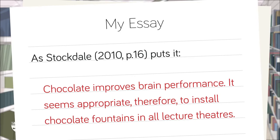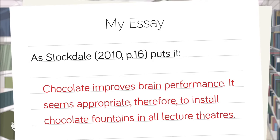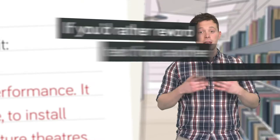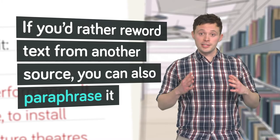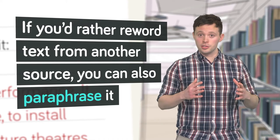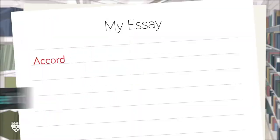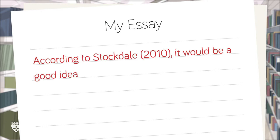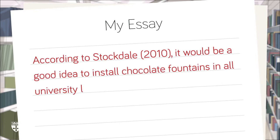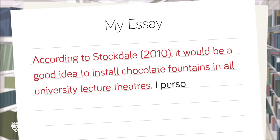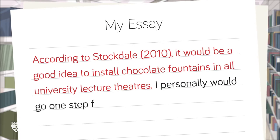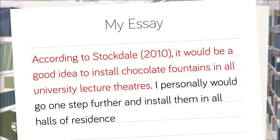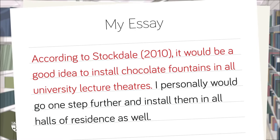But try to avoid quoting too much text at any one time. If you'd rather reword text from another source, you can also paraphrase it. This demonstrates your understanding of the text and allows you to make it more concise and focused. It doesn't matter if you think your version isn't as polished — what matters is that the reader can see how well you've understood and interpreted it.